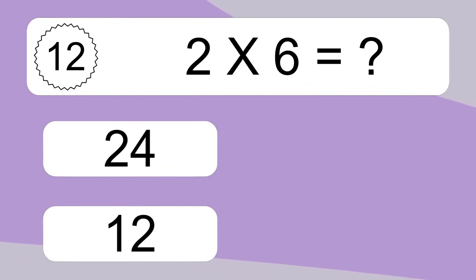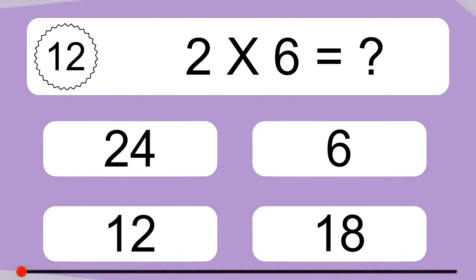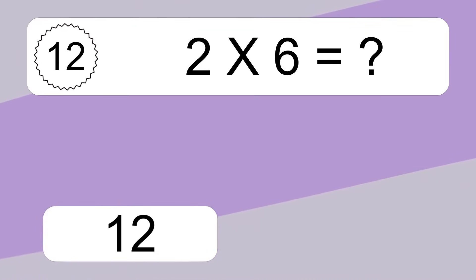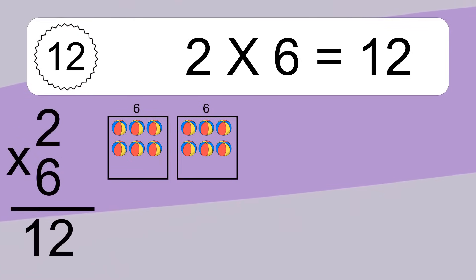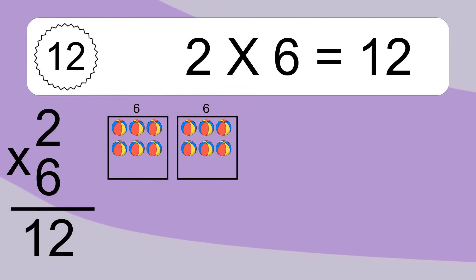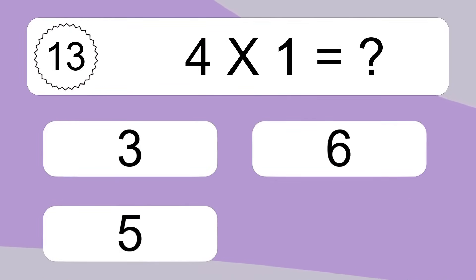2 times 6 equals what? 2 times 6 equals 12. We have 2 boxes and each box has 6 colorful balls inside. If you count all the balls in all the boxes together, you will have 2 times 6 balls. This equals 12 balls.